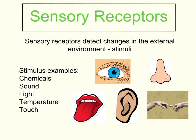This slide focuses on sensory receptors, which are the first stage in the Stimulus Response Model. Sensory receptors detect changes in the external environment, also known as stimuli — which is the plural for a stimulus. Our five sensors are sight, smell, taste, sound, and touch. Those five sensors are critical for us to be able to protect ourselves from danger and make sure that we don't end up in any dangerous situations.